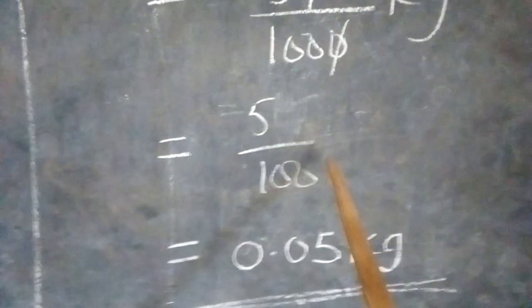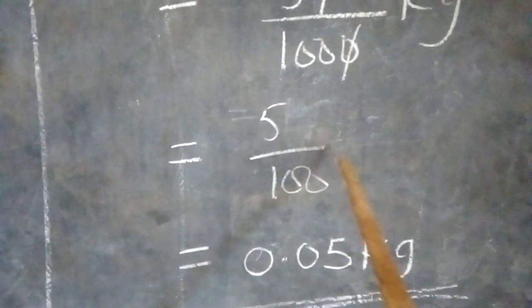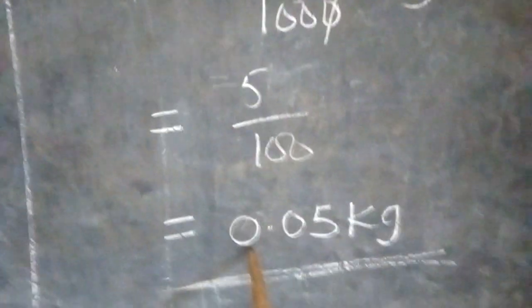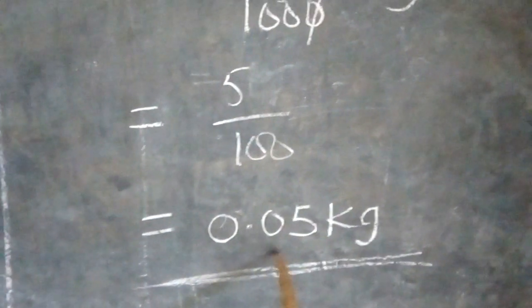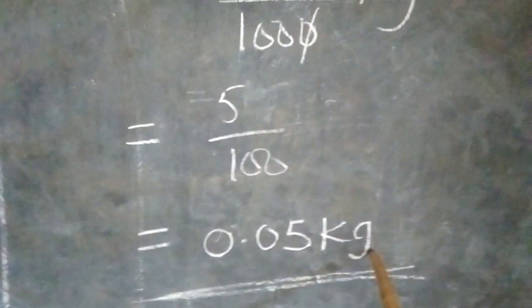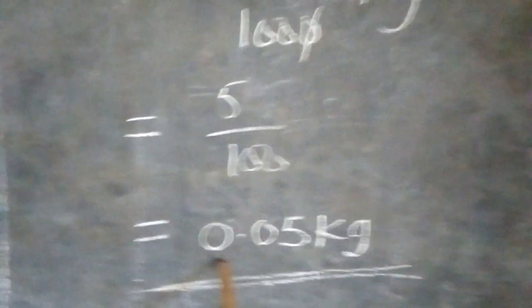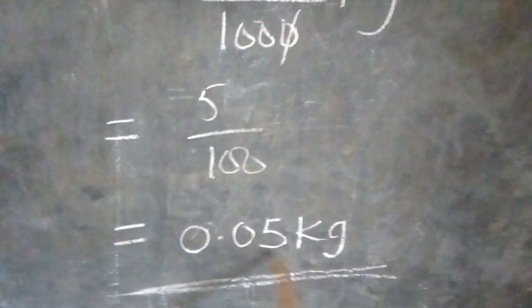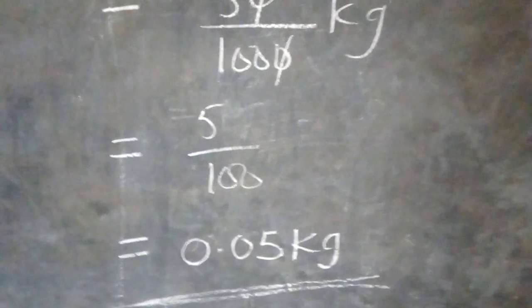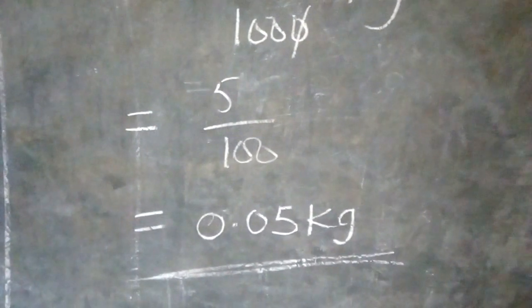When you do that, this is conversion of a fraction to decimal. You have 0.05 kilograms. Whatever answer you get here, the unit will now be kilograms. So the answer is 0.05 kilograms.